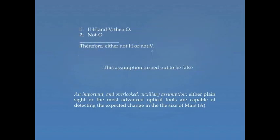So it's not just H that we're testing. Rather, we're testing H and a whole bunch of other claims. One of those additional claims was V. The claim that our best optical tools and plain sight would be able to detect the change in Mars' size. So the real argument should be this: if H and V then O, not O, therefore either not H or not V. So the defender of the Copernican model can hold on to the core assumptions, the core claims of the hypothesis, and just deny one of the auxiliary assumptions. In this case, he can just deny V.